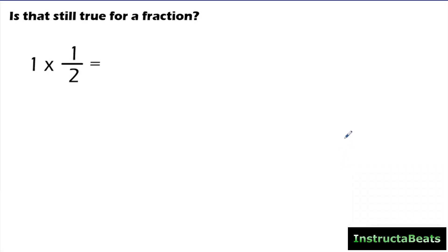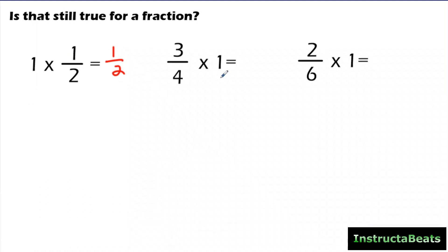Is that still true for a fraction? If I have one group of one-half, how much do I have? The answer is one-half. So it is still true for a fraction. One-half times 1 is one-half. Three-fourths times 1 is three-fourths, because the identity property of multiplication applies to fractions too. Two-sixths times 1 is two-sixths — it's itself, so two-sixths is equivalent to two-sixths.